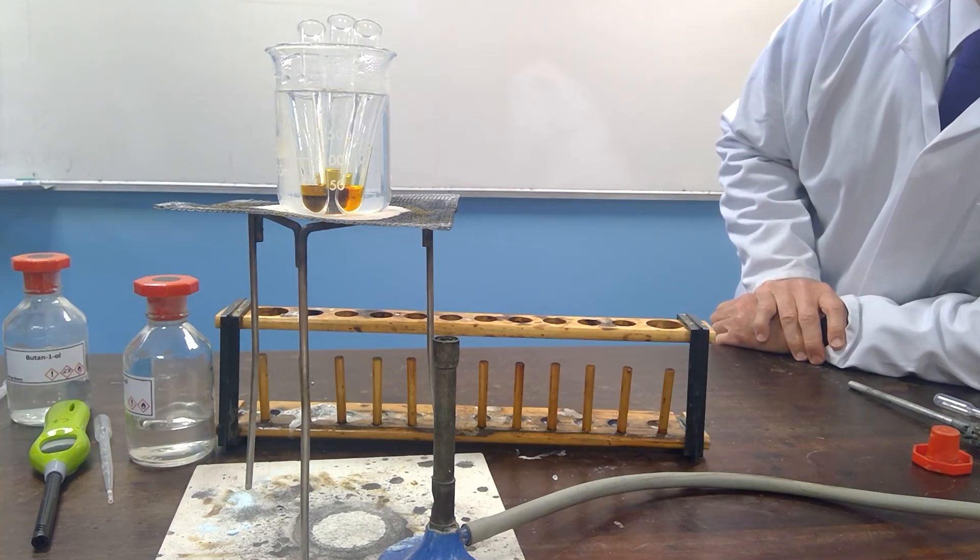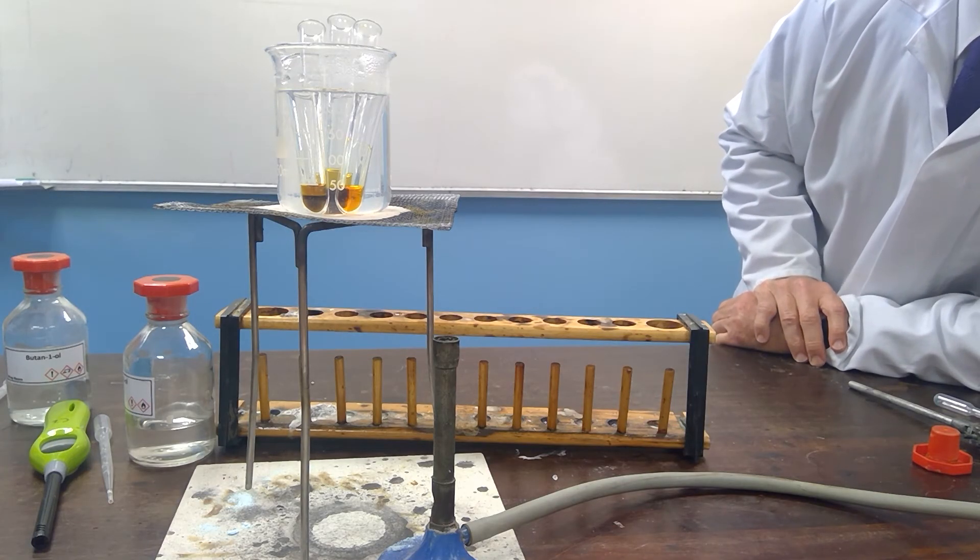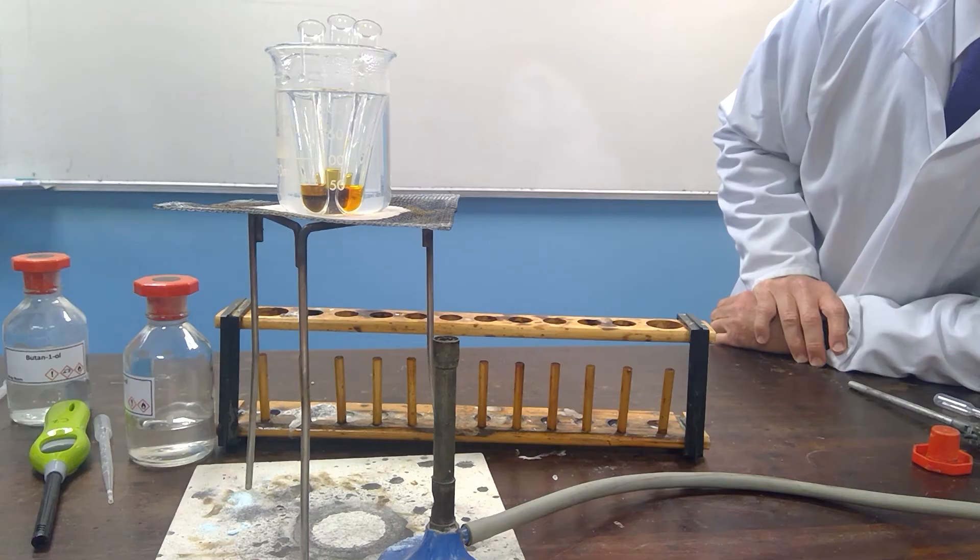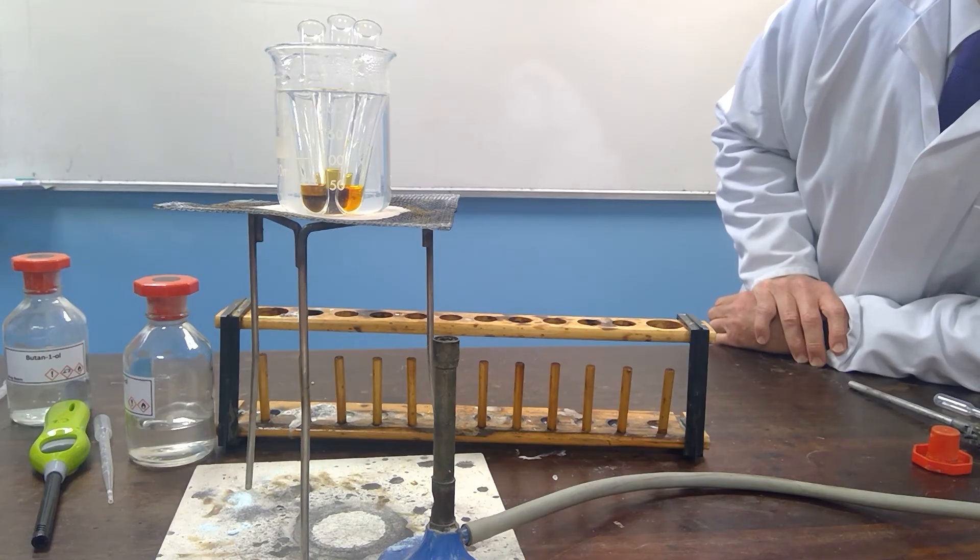The dichromate ion, Cr2O7^2-, changes during this reaction if it's sufficiently acidic to the chromium-3-ion, Cr^3+, which is the green colour.